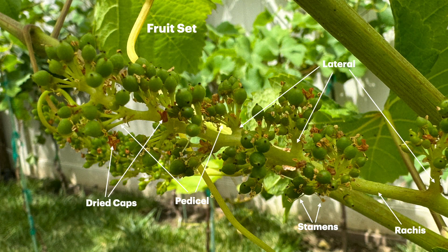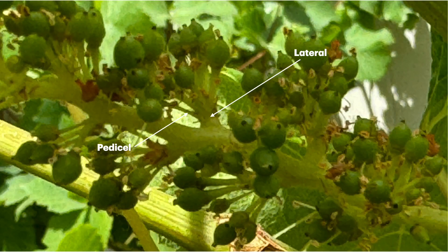Here we can look at a closer morphology and structure of the cluster, where you can see that there's the ratchets with laterals coming off of the ratchets, giving a tree-like appearance with branches. Those branches are laterals, which are then branched again, attached to berries, which are known as pedicels. Here you can see some dried stamens after fruit set and some dried caps, and here's a closer look at that lateral and pedicel.